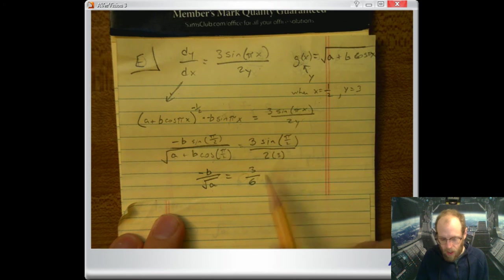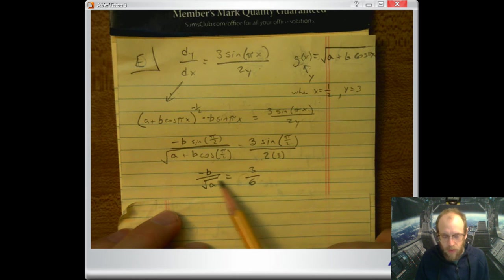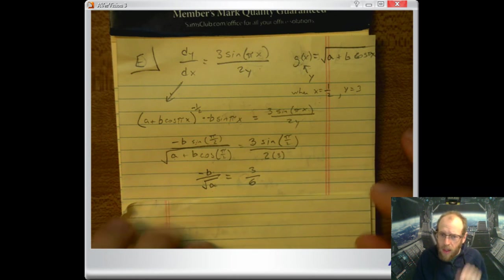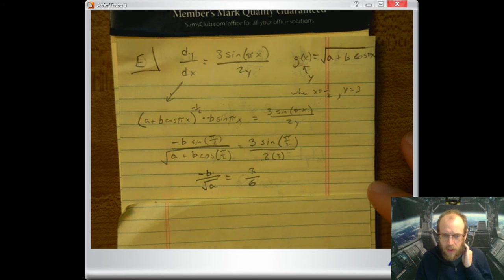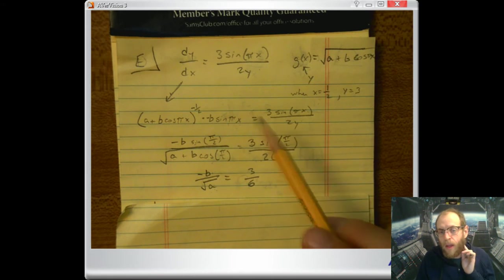Hey cool, only problem we've still got two variables. So there are a couple of ways you could deal with this. I could solve this for b and plug it back into this other equation.